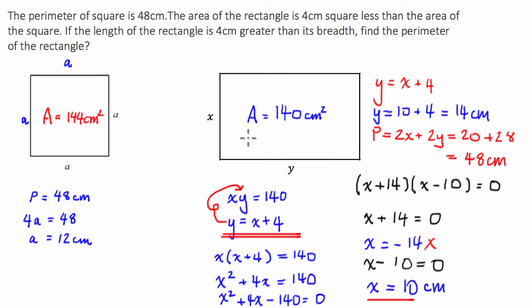So just to make the question a bit easier to follow, I'm going to write the perimeter of the rectangle is equal to 48 centimeters.